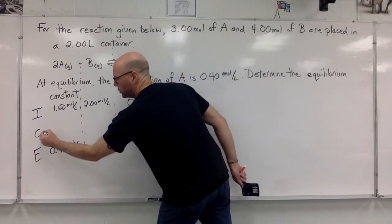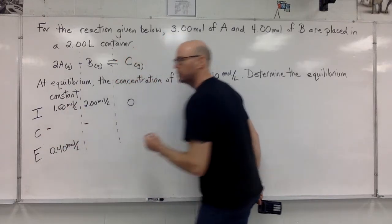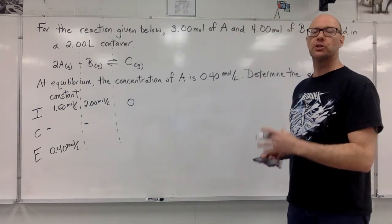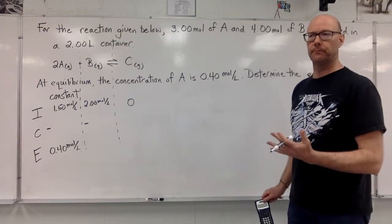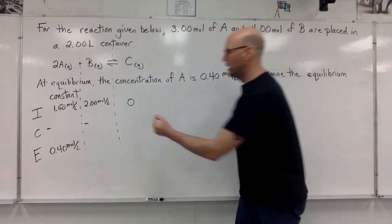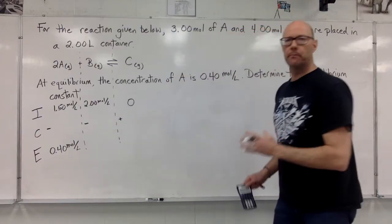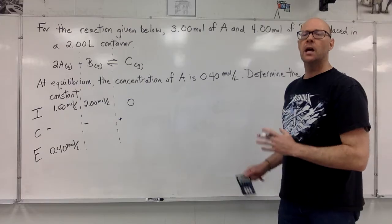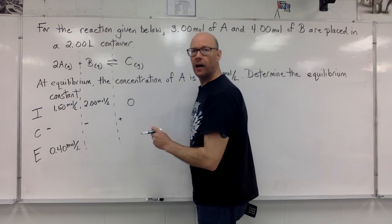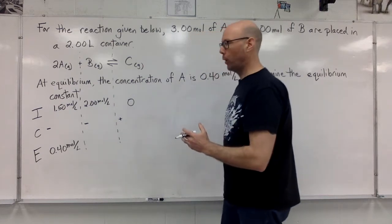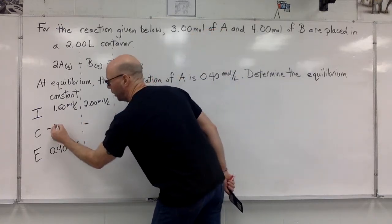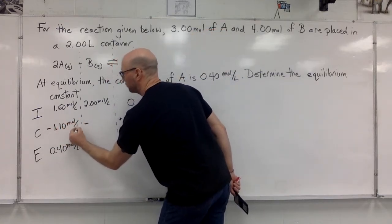Here, the two reactants experienced negative change. Their concentrations had to go down as the reaction proceeded towards equilibrium. Chemical C started at 0. It had to increase. It experienced positive chemical change. Now we're doing our best to fill in what we can. Chemical A started at 1.5, and it ended up at 0.4. It went down by 1.10 moles per liter.